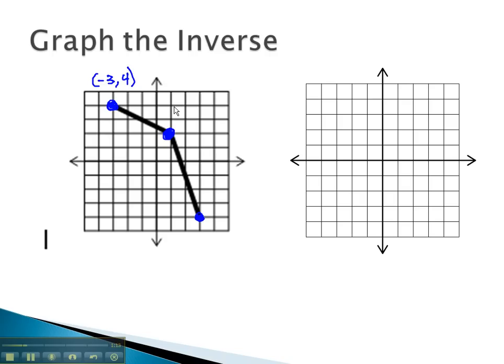To graph the inverse of this point, we'll switch those coordinates to get (4, -3). And we can graph (4, -3), and this is the point on our inverse graph.